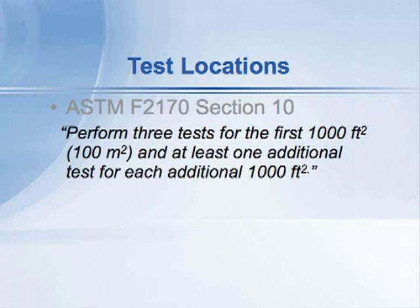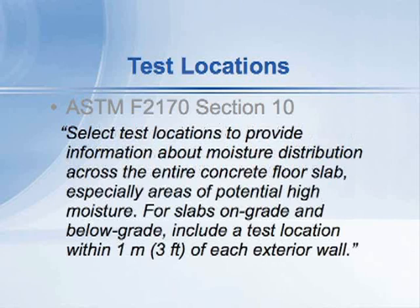Where do we actually put the probes? How do we choose locations within the building? The standard gives us some direction: select test locations to provide information about moisture distribution across the entire floor, especially areas of potential high moisture. For slabs on grade and below grade, include a test location within one meter or three feet of each exterior wall.